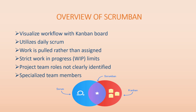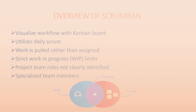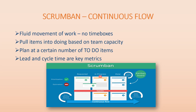In Scrumban, project team roles are not as clearly defined as in Scrum. In Scrum, teams are cross-functional — members should have knowledge of everything, so a UI person should also know backend. In Scrumban, however, specialized team members are preferred — a person should have deep expertise in one particular area, such as UI or backend. There are also two types of Scrumban itself.